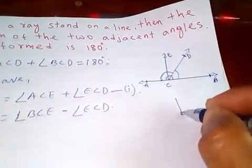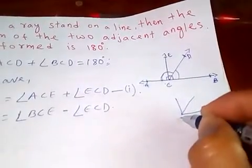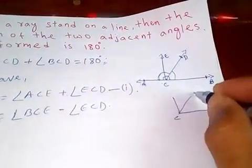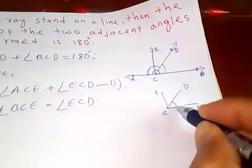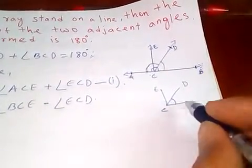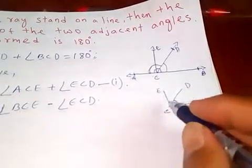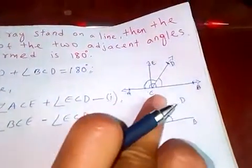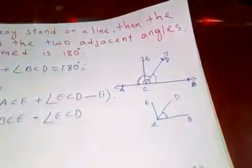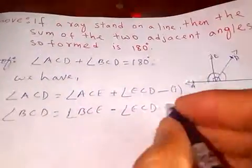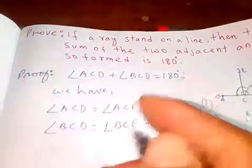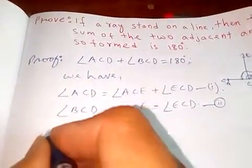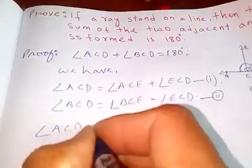So this is BCE minus ECD. If you tell this, we have the other person which is occurring, so let's take this as 2. Now we need to add. Now adding these two will get angle ACD plus angle BCD.